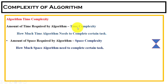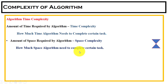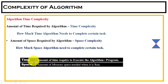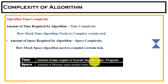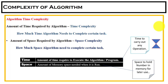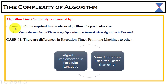Next is algorithm complexity. We can understand algorithm complexity through time complexity and space complexity. Time complexity means the amount of time required by any algorithm — how much time the algorithm needs to complete a certain task. Space complexity means the amount of space required — how much memory the algorithm needs when it runs. In an algorithm, we need time to carry out any operation and space to hold numbers in memory for later use.